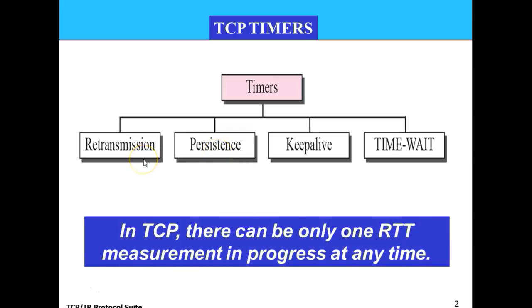These are the different timers that TCP actually has: retransmission, persistence, keep-alive, and time-wait timer. We will see each of these timers one by one.